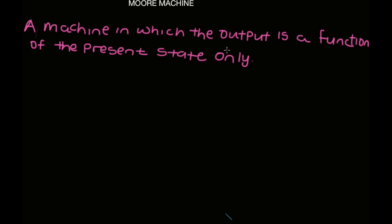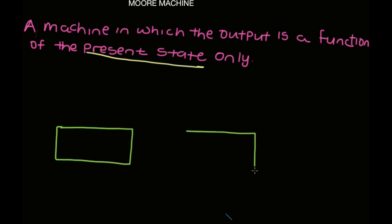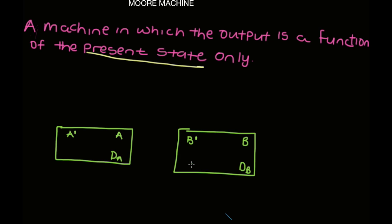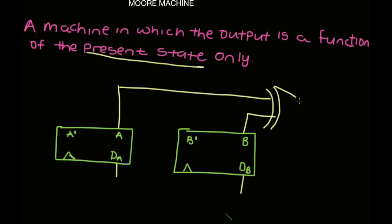Today we're going to be talking about the Moore machine. The Moore machine is basically a machine in which the output is a function of the present state only. I'm going to explain this definition using a diagram. Let's imagine we have two D flip-flops — we'll call the first flip-flop A and the second flip-flop B. We have DA with outputs A and A', and DB with outputs B and B'. Their output wires are connected to an XOR gate and the output is Z. This is a Moore machine.